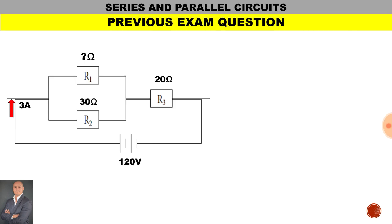Here we have our circuit diagram: R1 and R2 are in parallel, and this parallel combination is connected in series with R3. The unknown factor is the value of R1. We have a total voltage supply of 120 volts and total current of 3 amps.